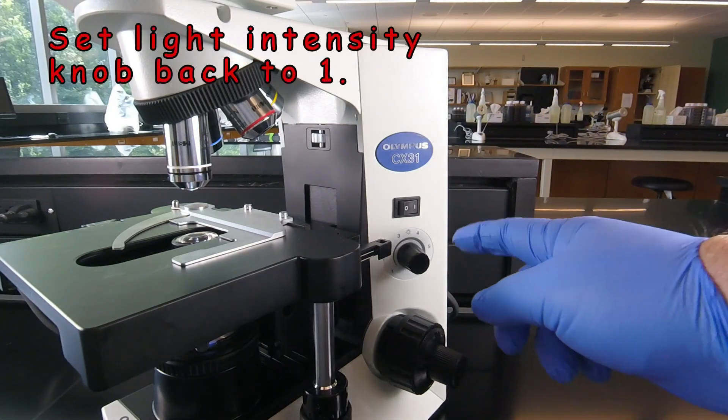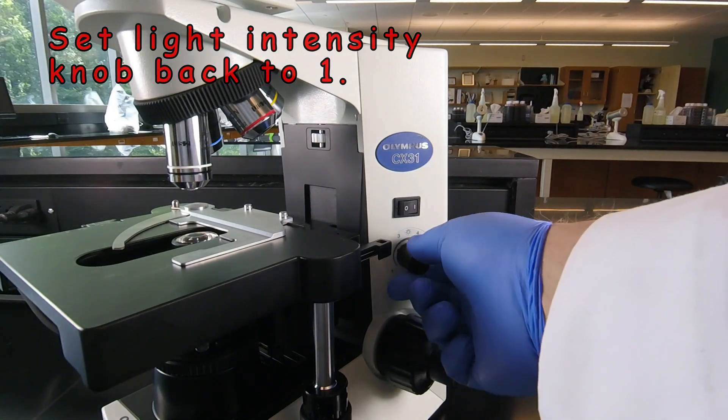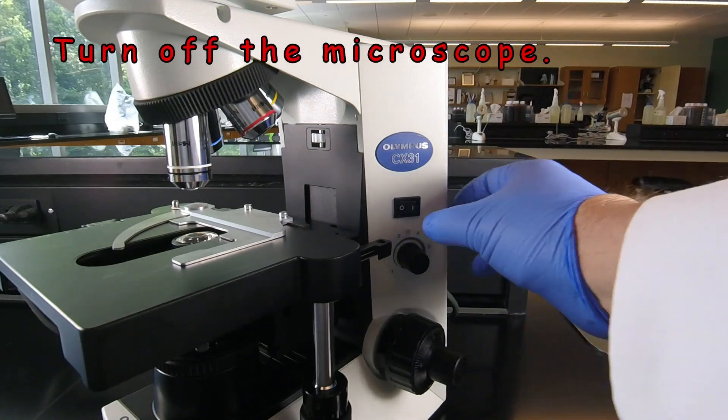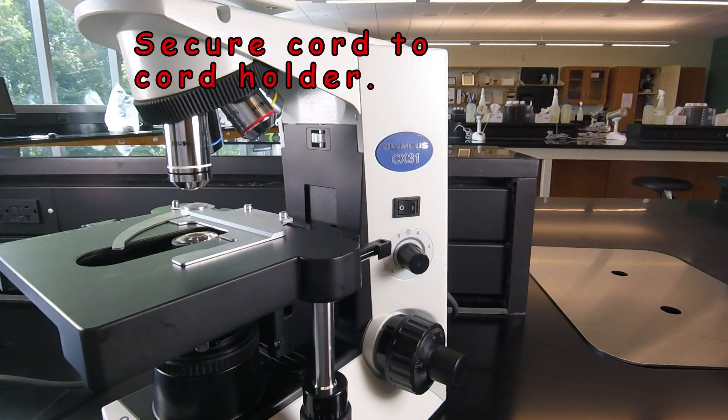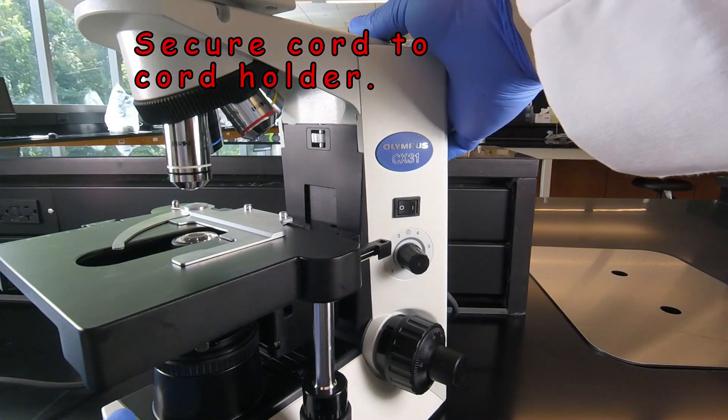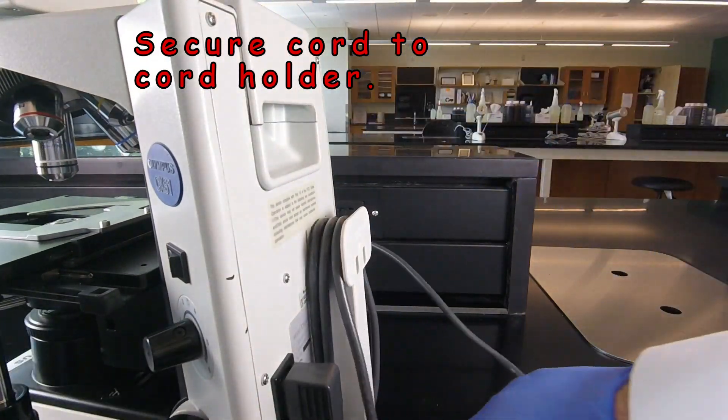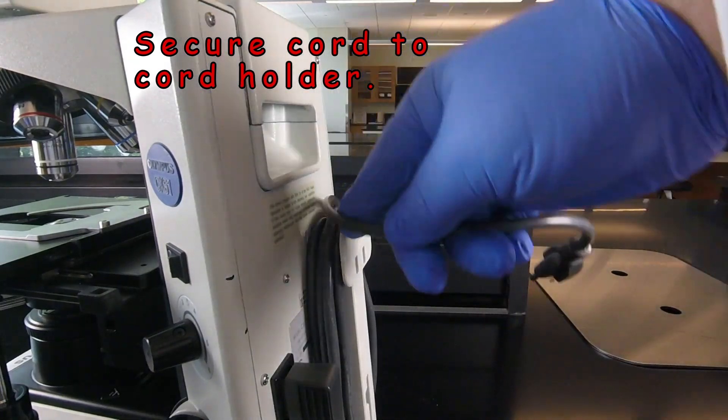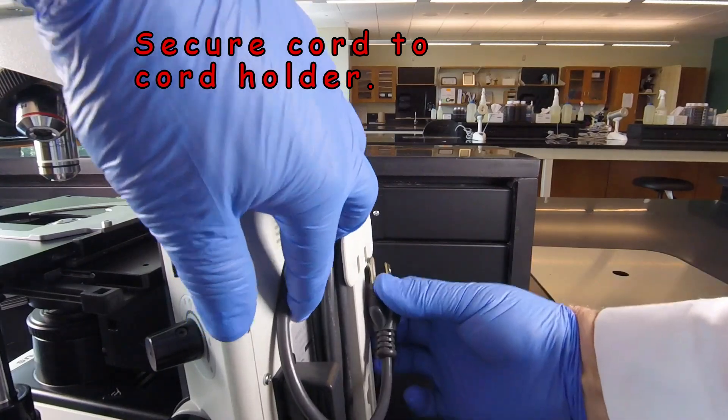Then we're going to take the light intensity control knob, turn that back down to one, turn the microscope off, and at that point we're going to unplug it. And then we're going to wrap the cord around the cord holder.